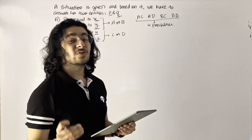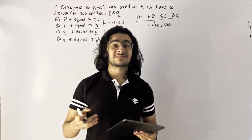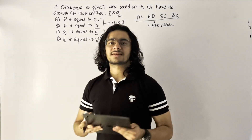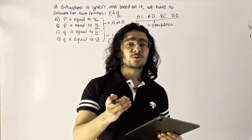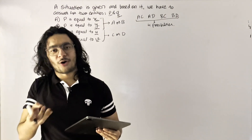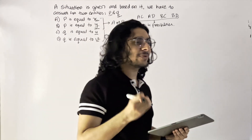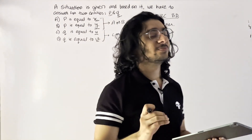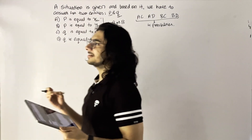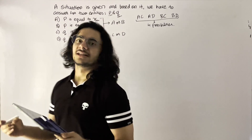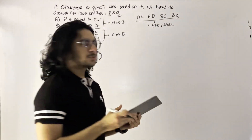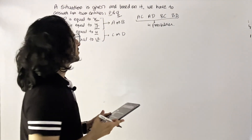Students are usually scared of multiple correct options because they think there are so many possibilities. In a regular multiple choice question there are only four possibilities — A, B, C, or D. But with multiple correct options, students get overwhelmed by the many possibilities and don't even try to solve it. Today I'm going to give you the probability zone.